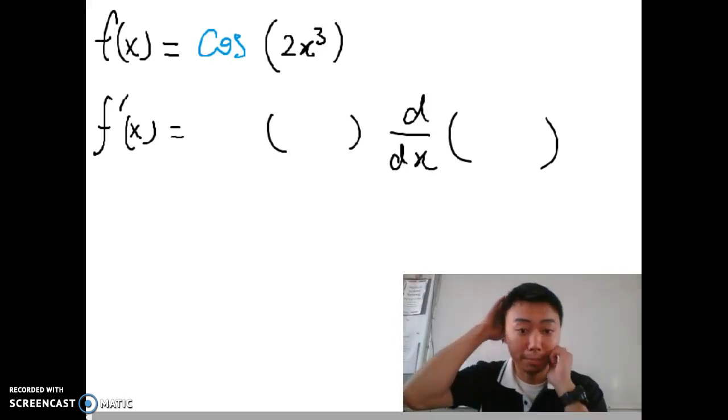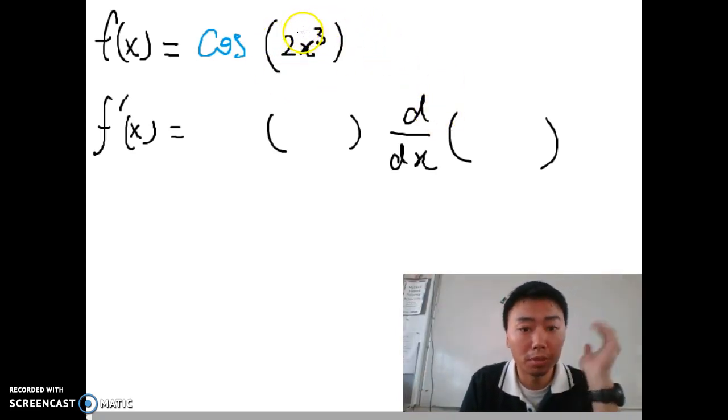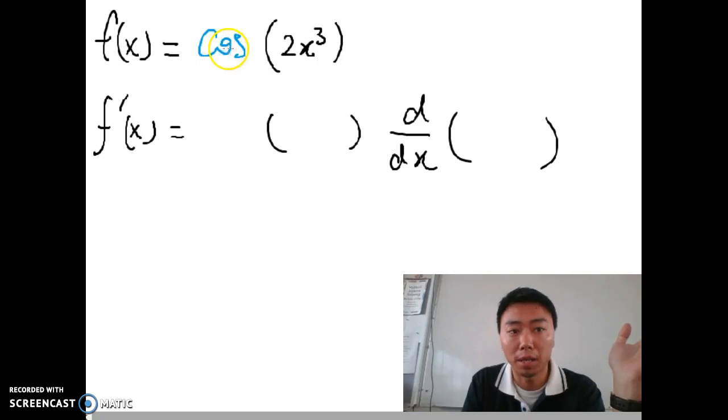Chain rule part 2. We've got a bracket, so we use chain rule. We all know something's outside, we have to change first and then copy the brackets.